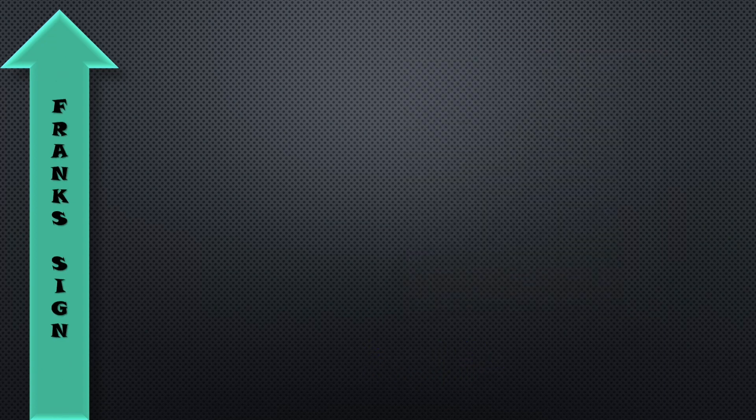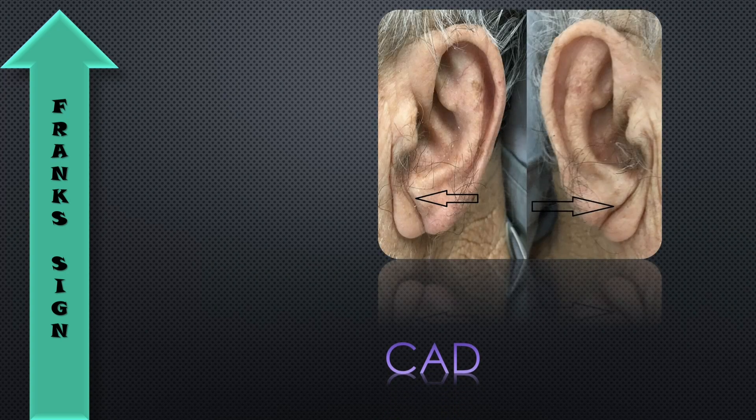The next one is the Frank sign. This is the Frank sign, mainly seen in coronary arterial disease or ischemic heart disease. It is an earlobe crease — this earlobe crease is mainly associated with coronary arterial diseases.